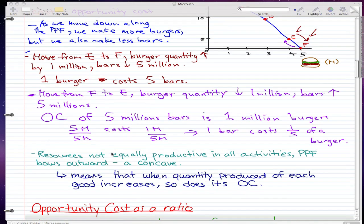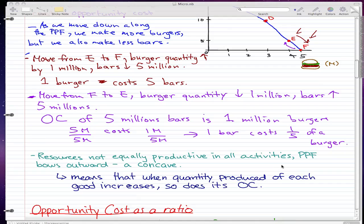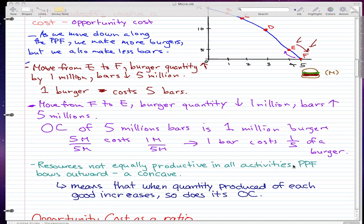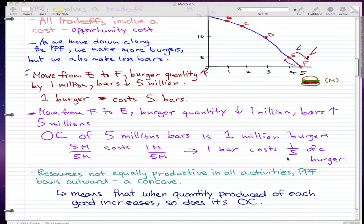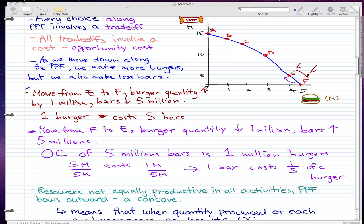I'm going to start this video off with the fact that resources are not equally productive in all activities, and that is intuitive in any logical case. And that is what causes the PPF to bow outward, to have a concave like what we have here. It's a nice curve that bows outward.